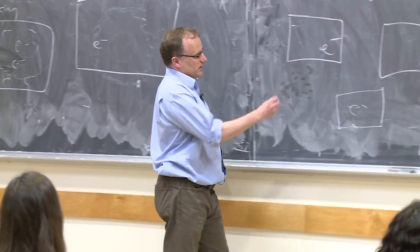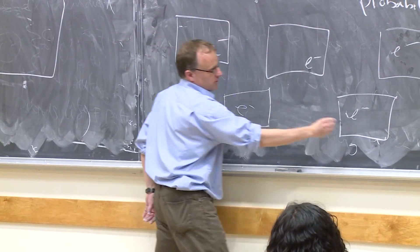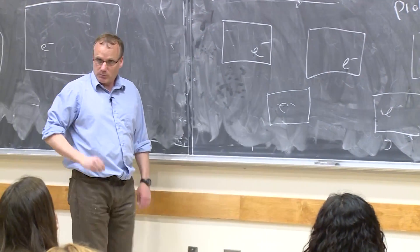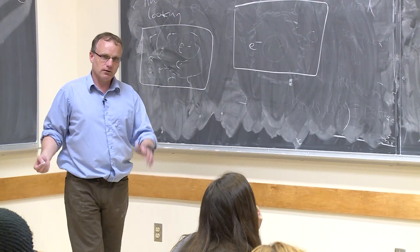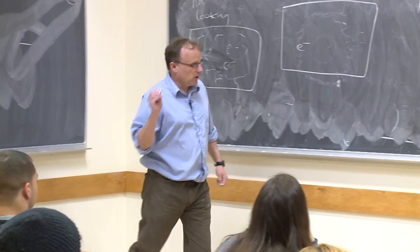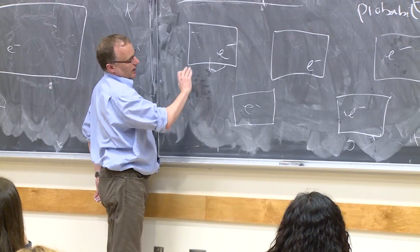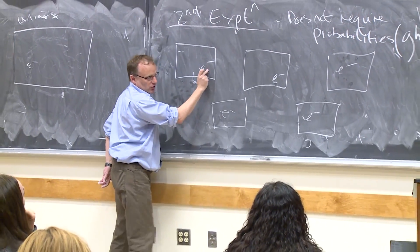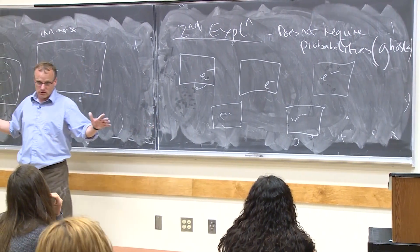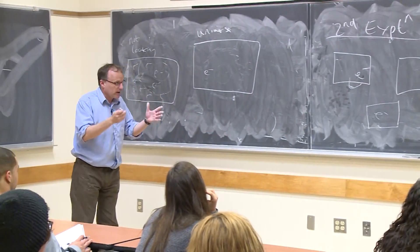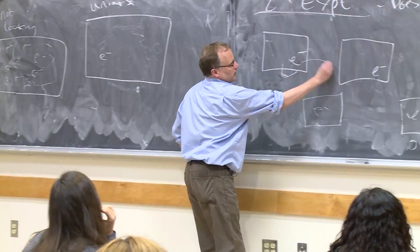That there are an infinite number of universes, and when you're not looking, all the universes are interfering with each other, producing wave properties, interference patterns, that type of thing. But then when you look at it, you do an experiment, you observe the electron, and all the interaction between this electron and all the other universes ceases to exist. So by looking at it, you break the bond between the universes.